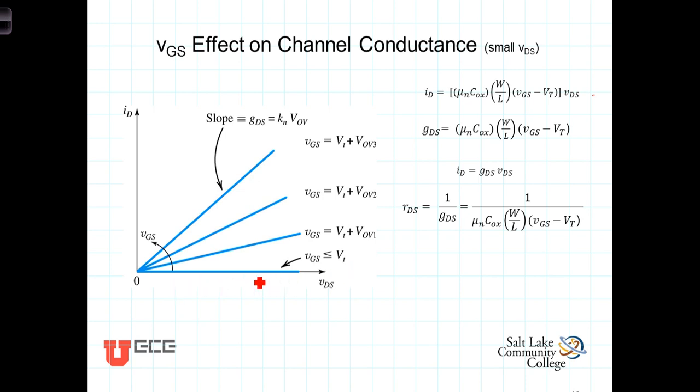As VGS increases to some amount over the threshold voltage, we then start getting current flowing and we see that current is a function of VDS. So each of these different lines represents a different current-voltage relationship and it depends upon GDS, which is, again, that case of N times the overdrive voltage.